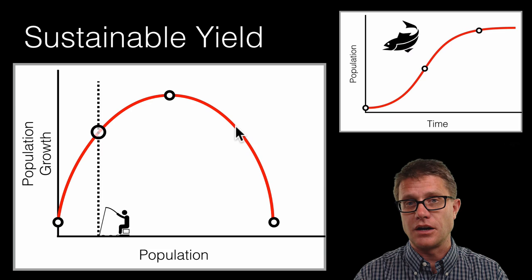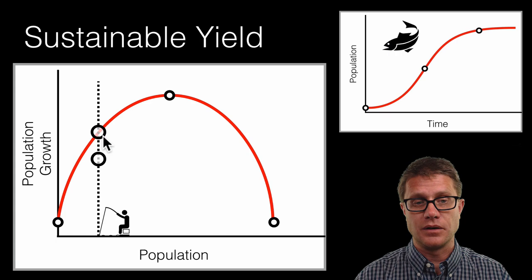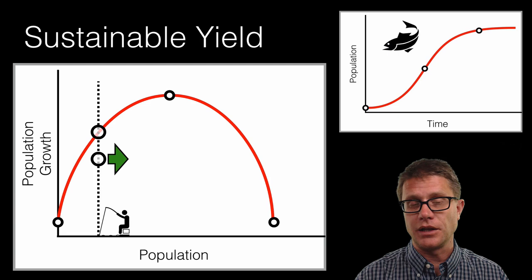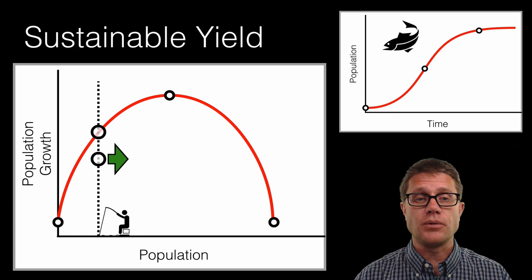Let us say we catch less fish than that at a lower growth rate. What is going to happen? Well this amount right here that we did not catch will add to the population. And so what is going to happen to the population? It is going to move to the right. We are going to have an increase in the amount of fish in that area.